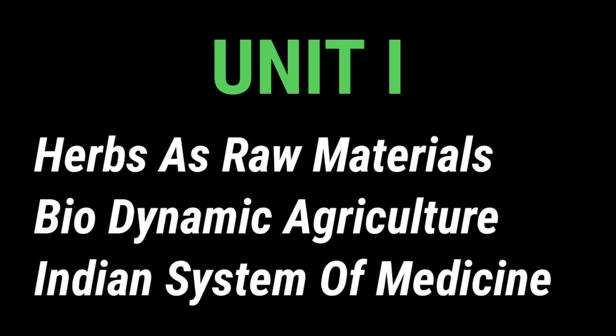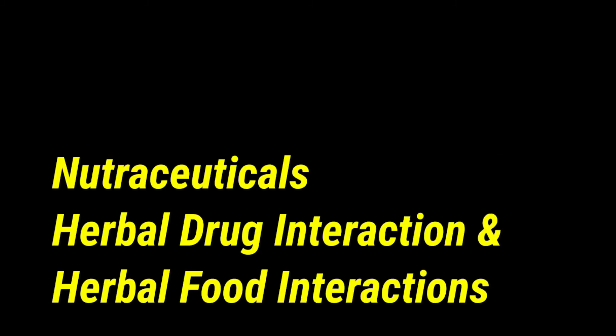In the first unit, the topics are: herb as raw material, biodynamic agriculture, and Indian systems of medicine — that is Ayurveda, Yoga, Unani, Siddha, and Homeopathy. It also includes organic farming and basic definitions.